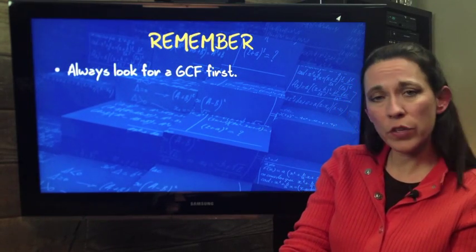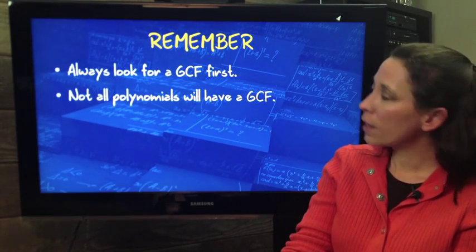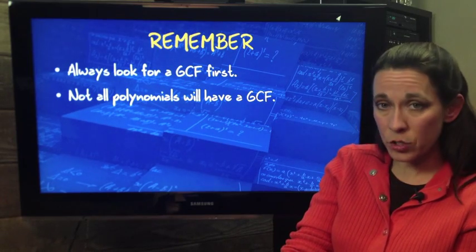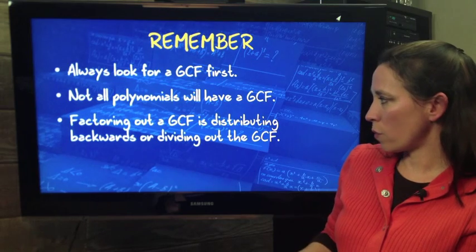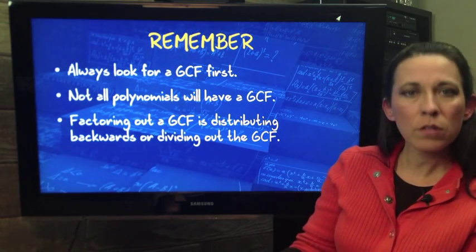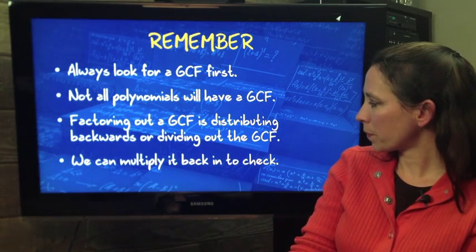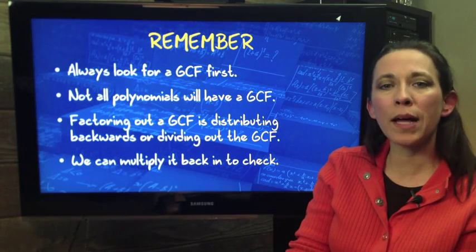So, just to recap, to remember, always look for a GCF first. Not all polynomials will have a GCF. Factoring out a GCF is distributing backwards or dividing out the GCF. And we can always multiply back in to check.